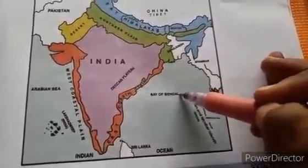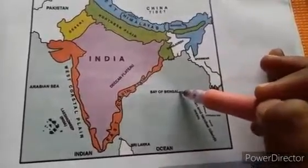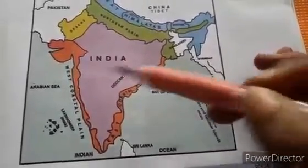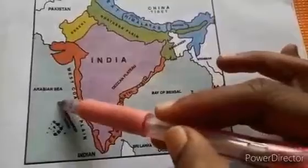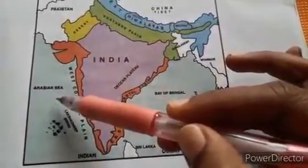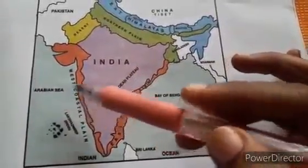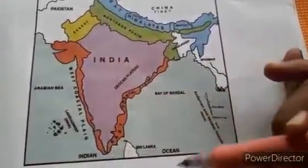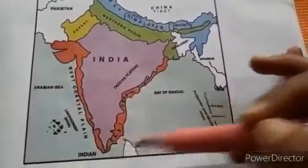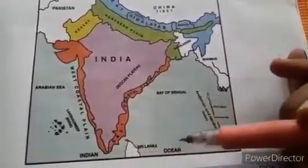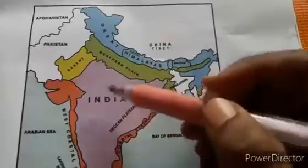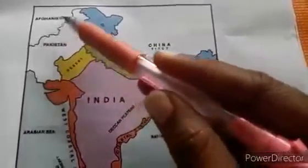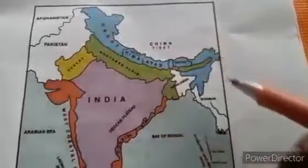In the east it is surrounded by the Bay of Bengal, in the west it is surrounded by the Arabian Sea, and in the south it is surrounded by the Indian Ocean. Next we're going to learn about our neighboring countries.